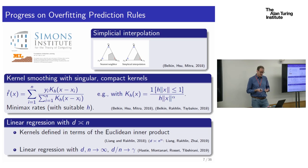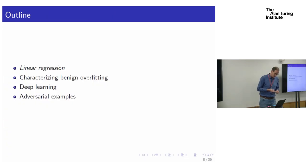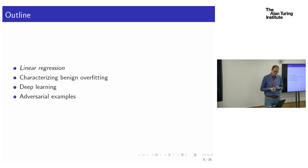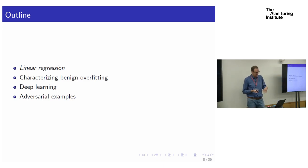The results I want to talk about are also in the linear regression setting, and we get a characterization of the excess risk. We can understand when a specific interpolating prediction rule in this setting is going to predict well and when it's not.